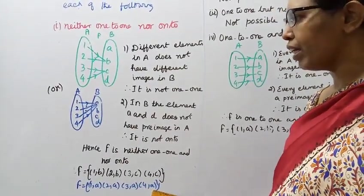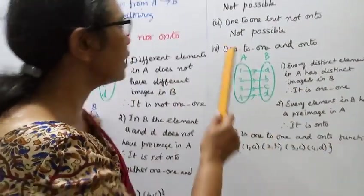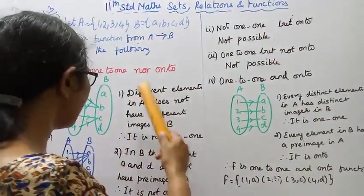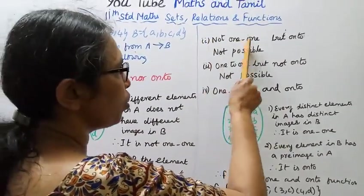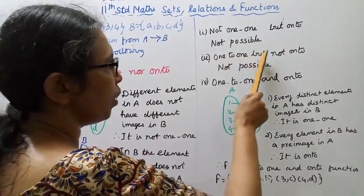Second: not 1-to-1 but onto. Looking at the definition, not 1-to-1 but onto - this is not possible.